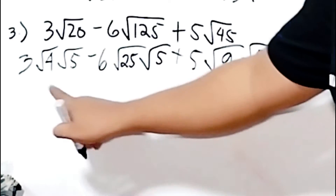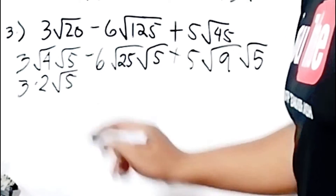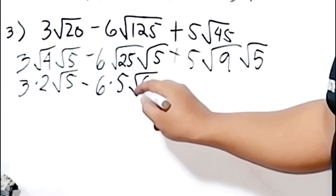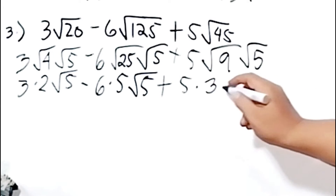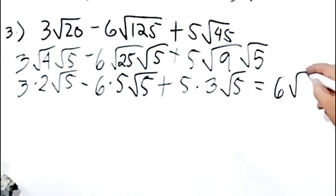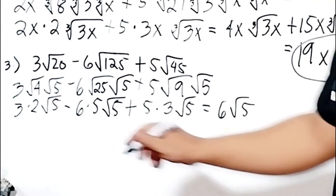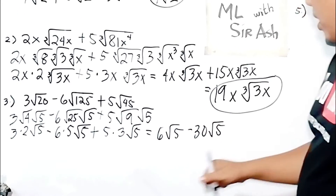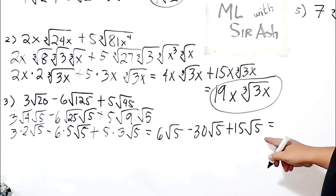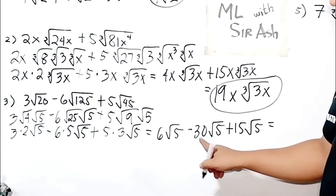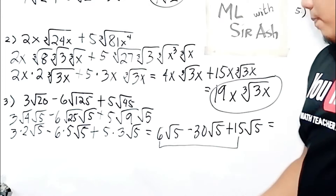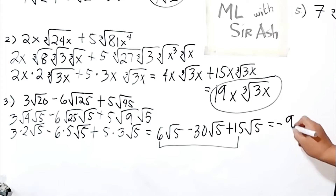Now let us simplify. Square root of 4 is 2, so 3 times 2 gives 6 square root of 5. Square root of 25 is 5, so 6 times 5 gives 30 square root of 5. Square root of 9 is 3, so 5 times 3 gives 15 square root of 5. Now all terms have the same radical expression. So: 6 plus 15 is 21, and 21 minus 30 gives negative 9 square root of 5. That will be the final answer.